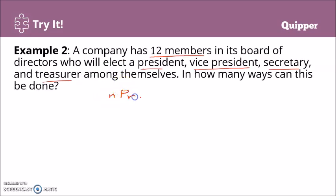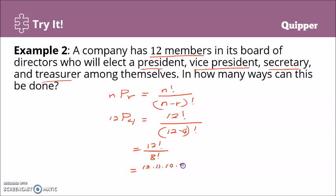nPr equals n factorial over n minus r factorial. We have 12 objects, r is 4. So that is 12 factorial over 12 minus 4 factorial. That equals 12 factorial over 8 factorial. Therefore, that is 12 times 11 times 10 times 9 times 8 factorial. Why do we stop at 8 factorial? Because we see 8 factorial in the denominator, so we can cancel it out.